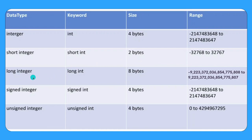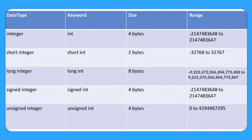When we pair long with integer, the keyword becomes long int. You can see the size is changing — the size of int is 4 bytes, but long int becomes 8 bytes. The range also gets changed accordingly, and you can store a huge value in the long integer data type.